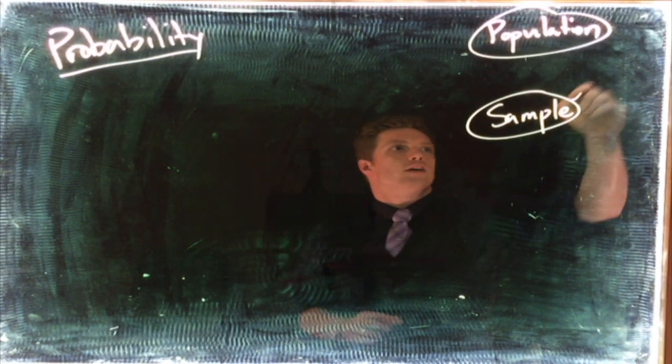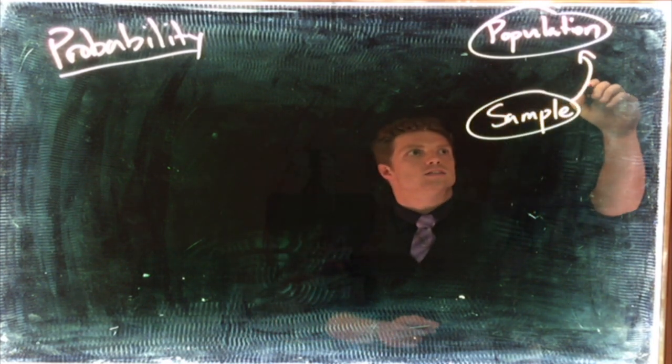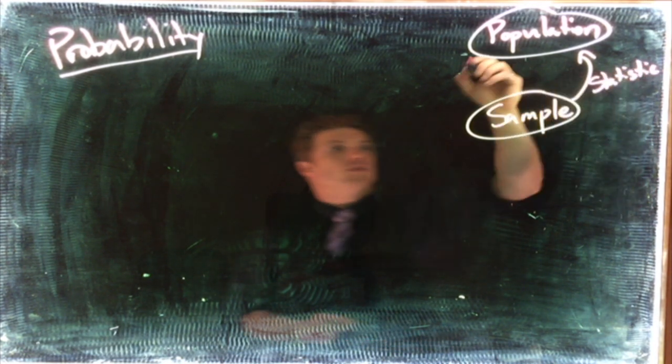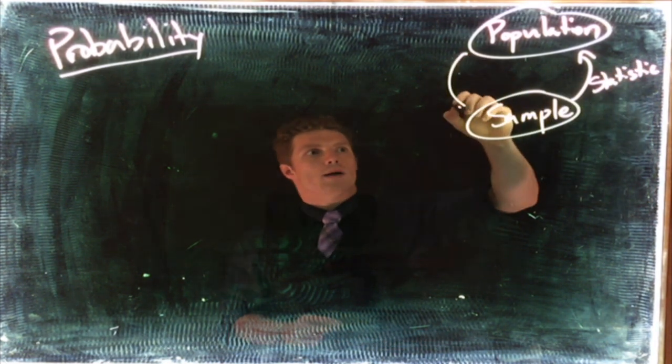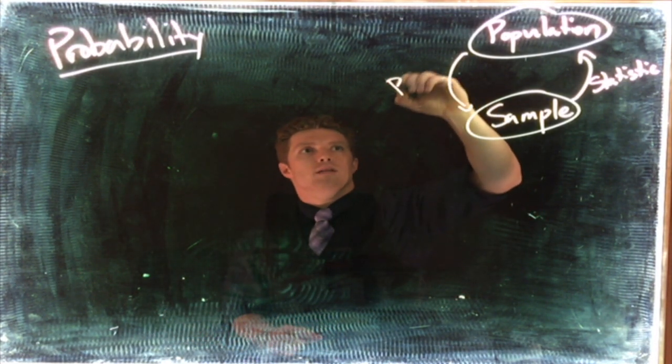Then we had these sets of arrows. We had an arrow coming up, so if we take a sample we're making conclusions about the population—that's statistics. And if instead we know the population and we're trying to decide what the sample would be, then that is probability.